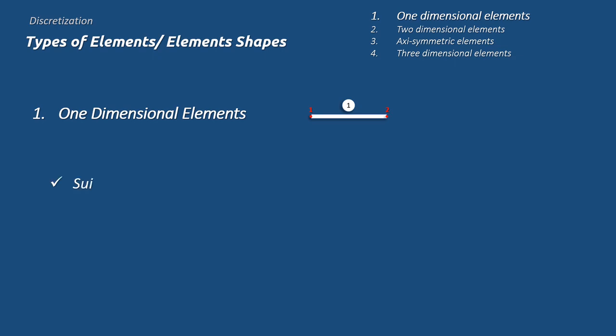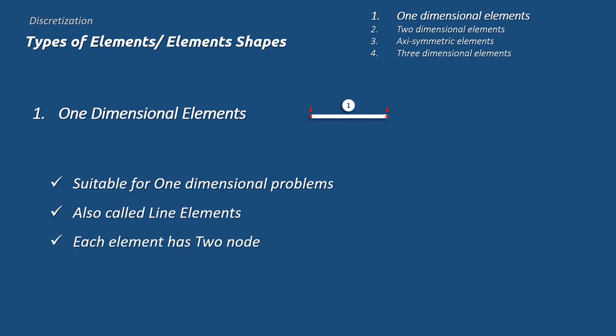One-dimensional element is used for one-dimensional problems only, where each node can displace or deform in one direction only. For example, plus or minus x-axis only or plus or minus y-axis only. Each node has one degree of freedom in any of the axis. So, each element has two nodes, so we can say that the element has a total of two degrees of freedom.